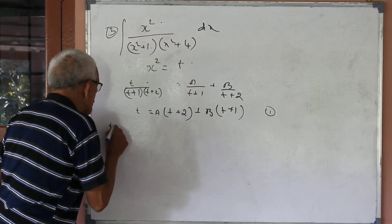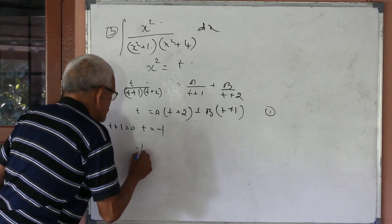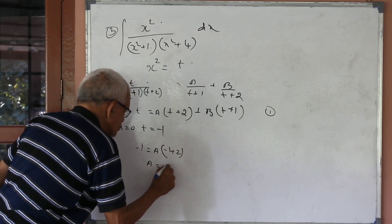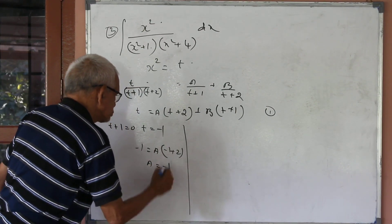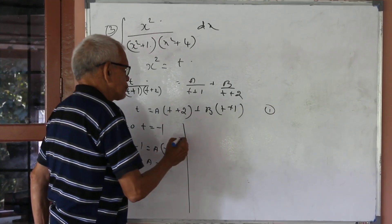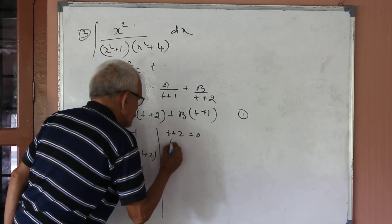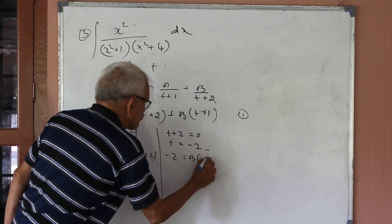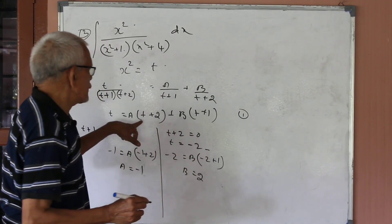T plus 1 equal to 0, T equal to minus 1. Substituting: minus 1 equals A into (minus 1 plus 2), so A equals minus 1. For B: T plus 2 equal to 0, T equal to minus 2. Minus 2 equals B into (minus 2 plus 1), so B equal to 2.